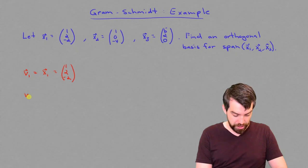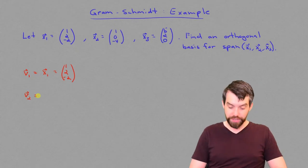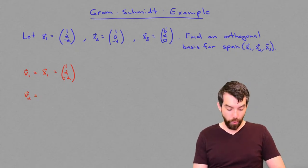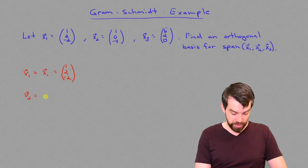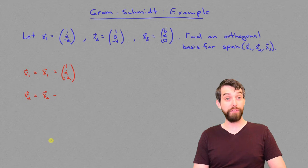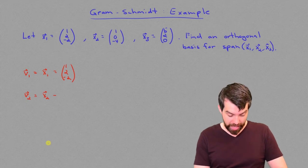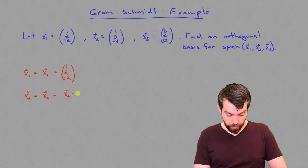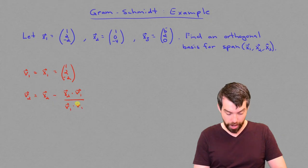Now I want to look at the v2. And this had a somewhat complicated formula. It was going to be the x2, and I subtract off the projection onto the x1. In other words, I took the x2, and I projected it onto the v1, rather, divided by the v1 dotted with the v1, all in the v1 direction.